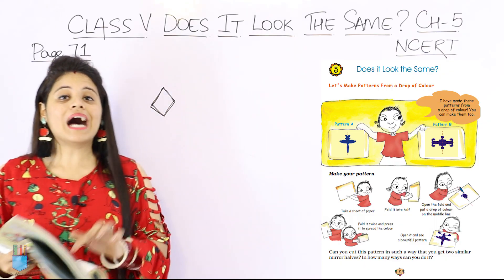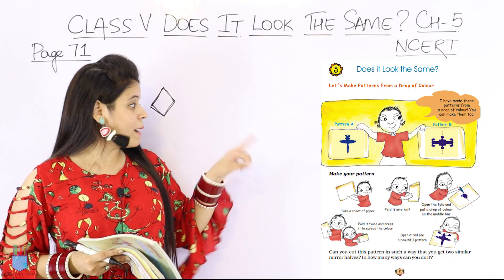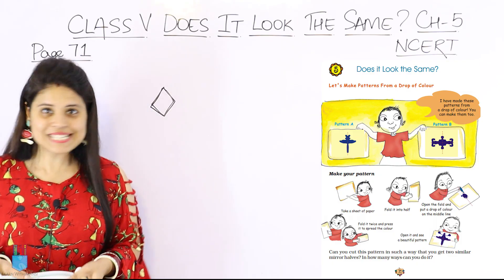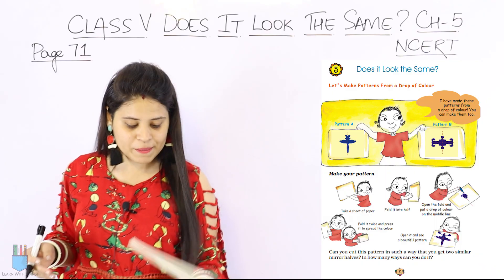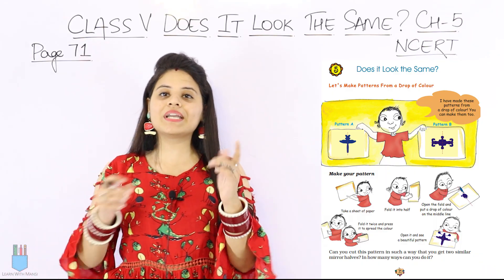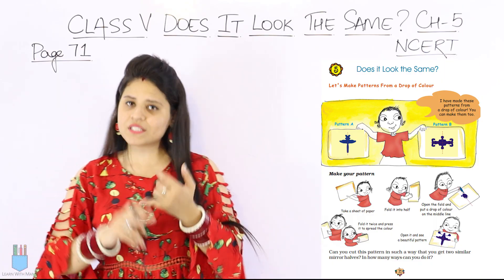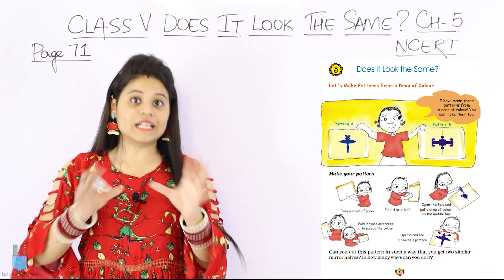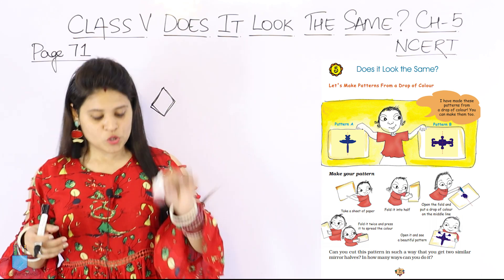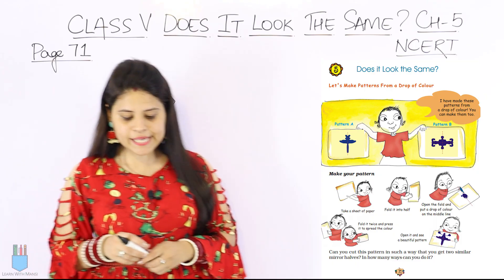Now how is it made? We will see that. In the second part, we can see that we have to make our own patterns. This activity is very interesting. First, let's look at the steps and do it together. All you need is a piece of paper and any color. I will be using an ink bottle, but you can take any color.